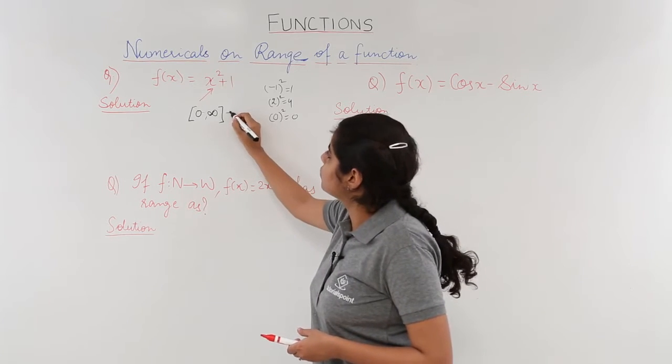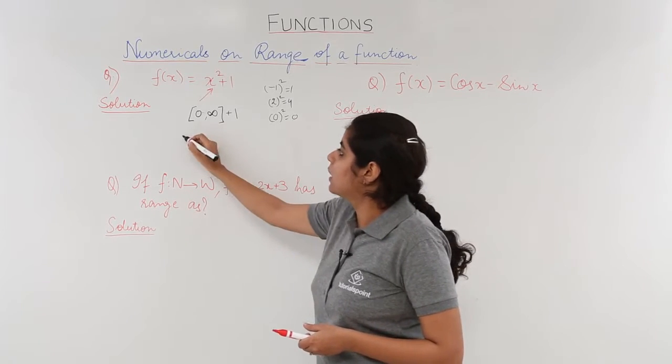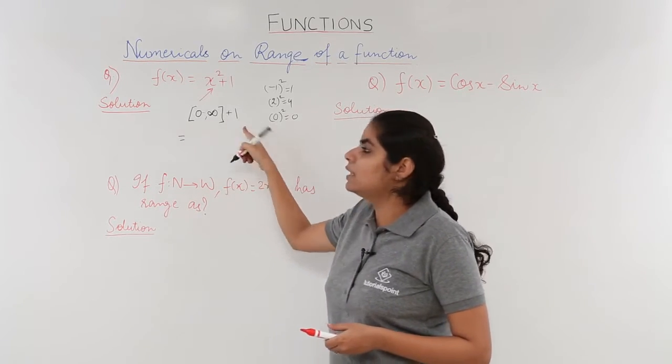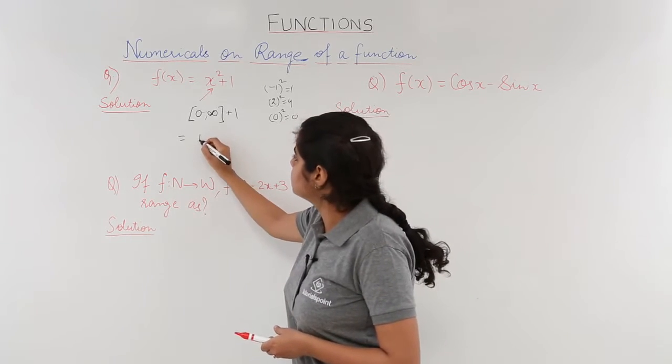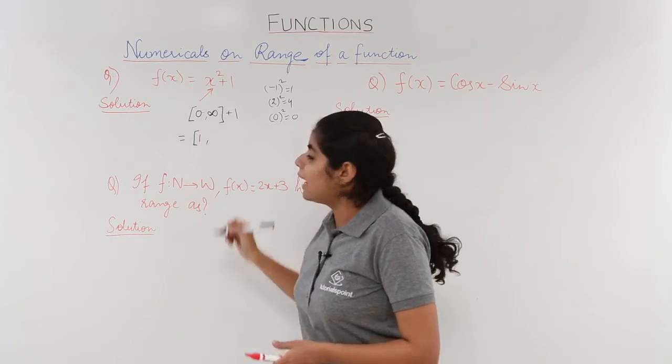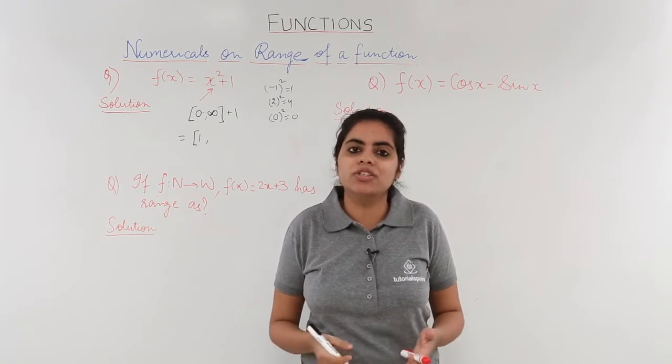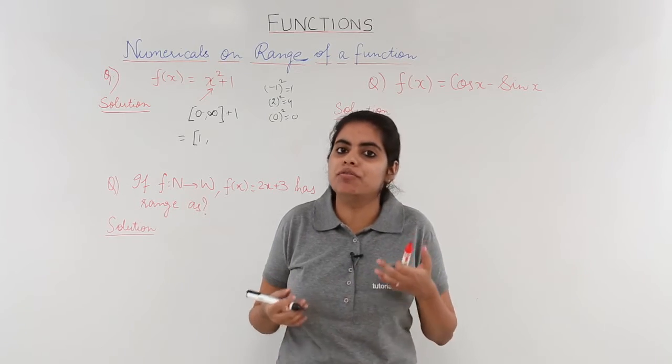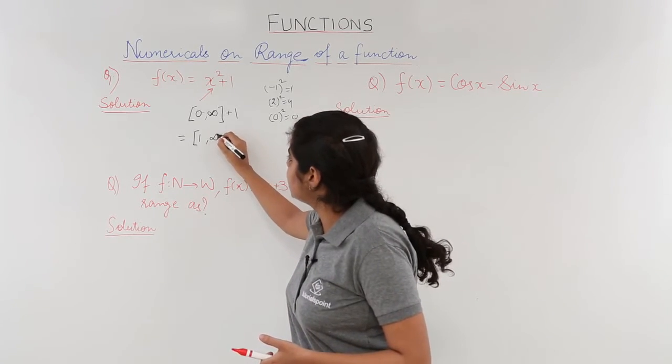I have 1 also in consideration. So the range is obtained by solving these two things. Now 0 plus 1 will give me 1, and infinity plus 1, what is infinity? Infinity is basically a very big number which cannot be reached. So a very big number with 1 added to it will again give me that big number only.